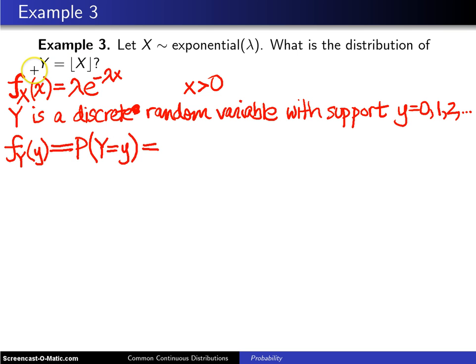How do we get a particular value y with this relationship? Let's just come up with an instance. Let's say y equals 5. How can you get y to be 5? And the answer is any value that is between 5 and just short of 6, when you take the floor of it, will give you a 5.